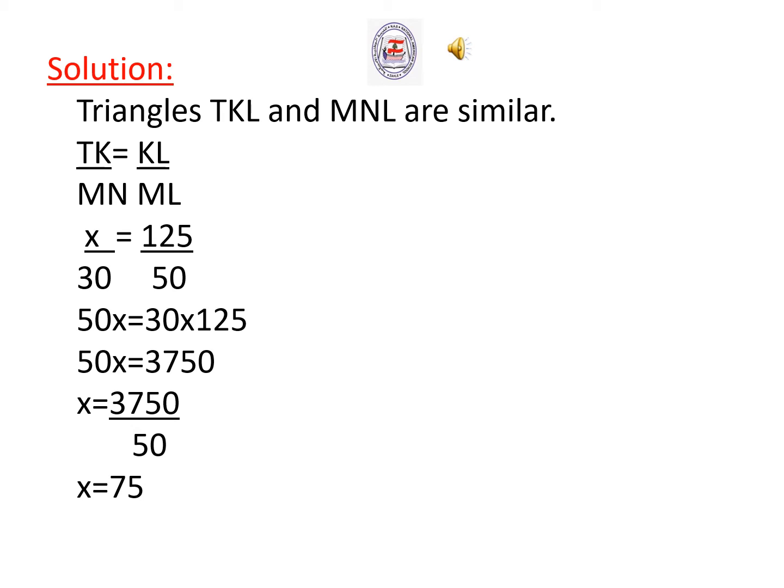50x equals 30 times 125. We use the cross product. 50x equals 3750. We simplify, then we solve the equation for x. X equals 3750 over 50. X equals 75.